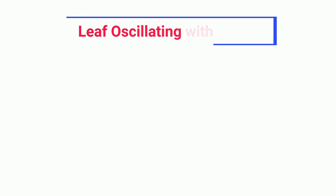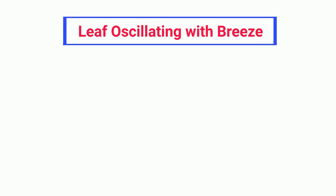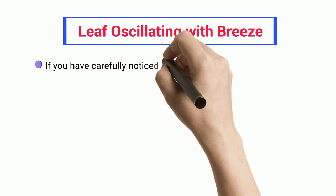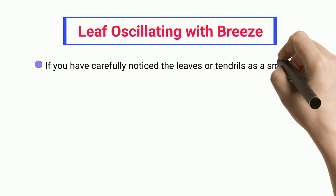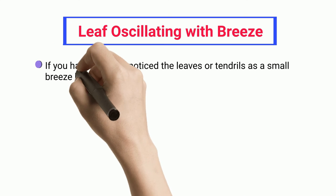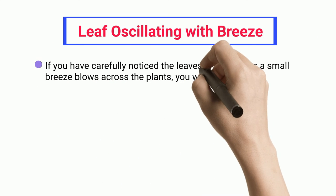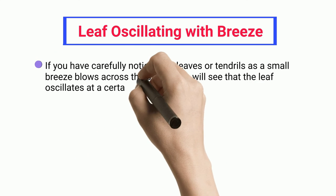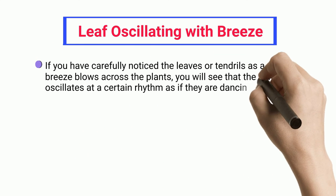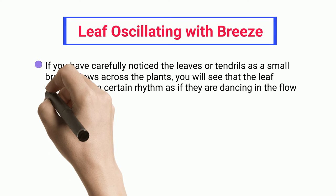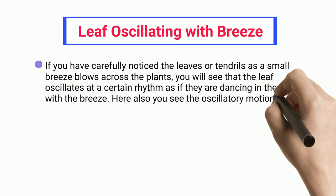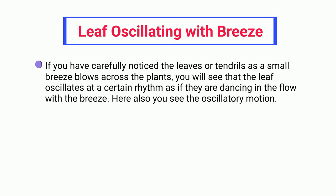Leaf Oscillating with Breeze. If you have carefully noticed the leaves or tendrils as a small breeze blows across the plants, you will see that the leaf oscillates at a certain rhythm as if they are dancing in the flow with the breeze. Here also you see the oscillatory motion.